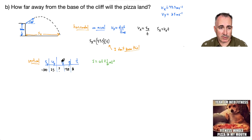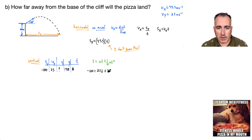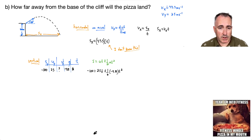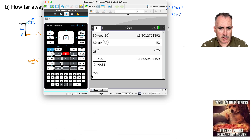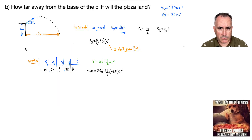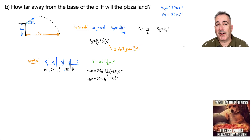Plugging in the numbers: minus 100 equals 25T plus ½ times (−9.81) times T², which simplifies to minus 100 equals 25T minus 4.905T². Moving everything to one side gives: 4.905T² minus 25T minus 100 equals 0. This is a quadratic — that's what makes this problem one of the toughest you'll see.